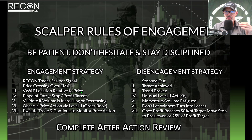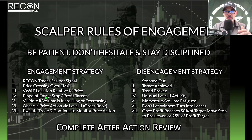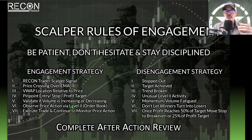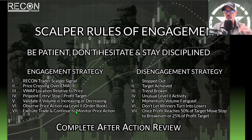I'm also considering the location of VWAP relative to the price. If all three of these are a go, I start to pinpoint my entry, stop loss, and profit target. Once I have those identified I validate whether volume is increasing or decreasing, then observe the price action via level twos or the order book on the exchange, and if everything is a go I pull the trigger and execute the trade.